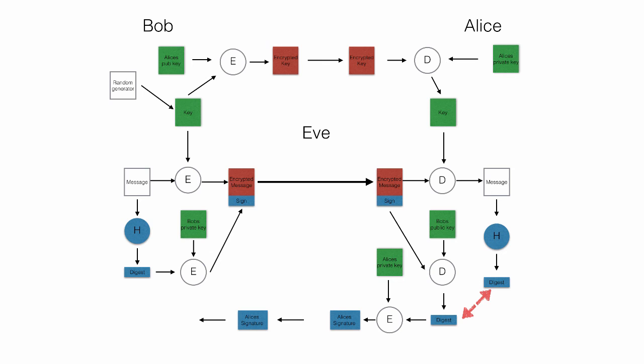When Bob receives that he decrypts it with Alice's public key. Out comes a digest, and he verifies the digest from the original message with the digest he received from Alice. If they are the same, he knows that the message was sent and received by Alice, and Alice has confirmed that she received it. Bob knows for sure that no one else but Alice received it, because the signature comes from Alice — and he knows that because it was encrypted with Alice's private key.